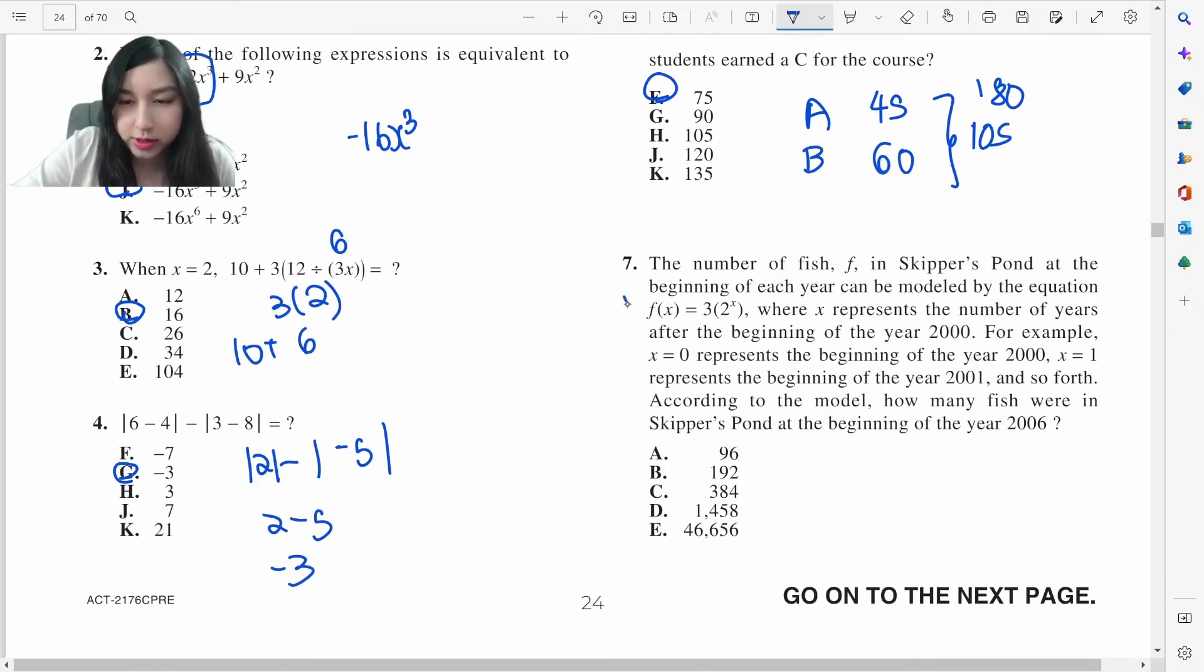Here is a function. How many fish in the beginning of 2006? x=1 is for 2001. I'm plugging in x as 6. So 3 times 2 to the power of 6. 2 to the power of 6 is 64 times 3, which is 192. B.